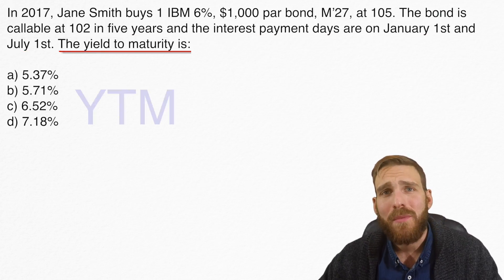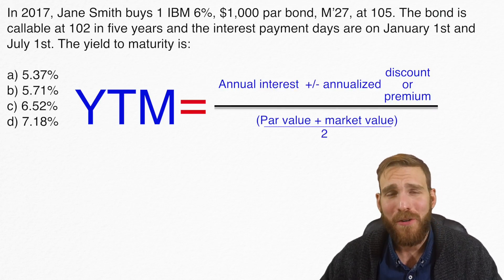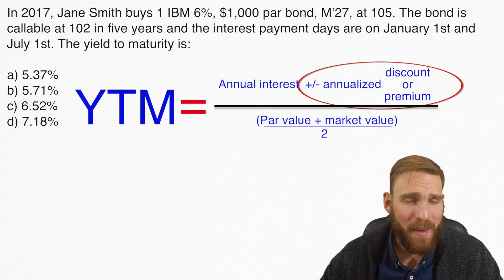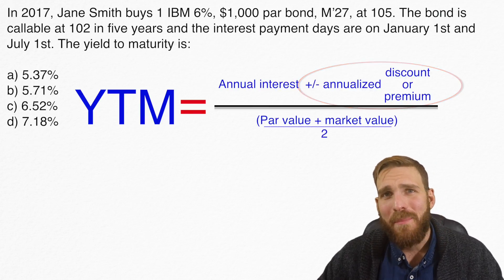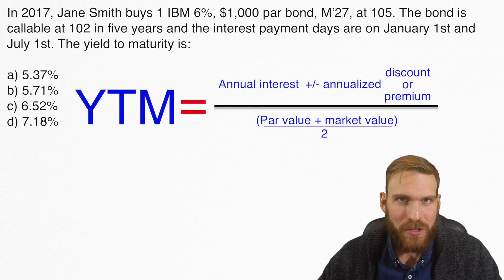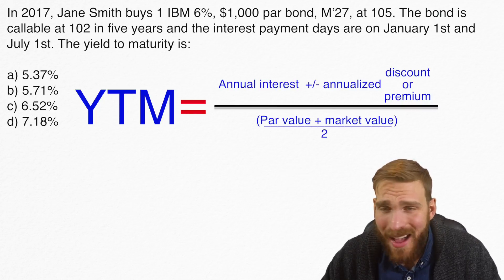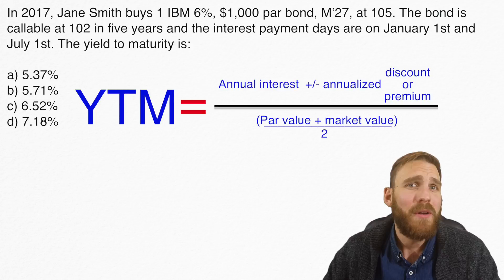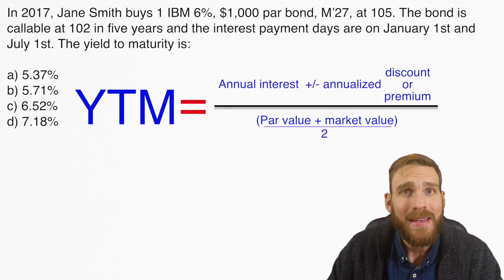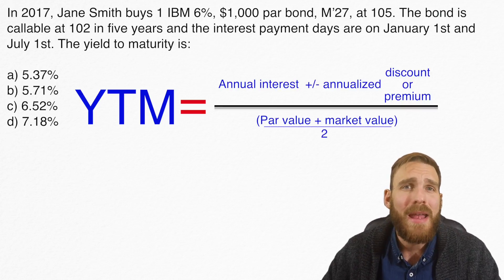There is a formula associated with yield to maturity and you could use that formula for this question. As you can see, there are a lot of parts to that formula. If you take your annual interest rate or annual coupon and subtract out your annualized discount or premium, and then divide that by the average bond price, that's how you get to the yield to maturity answer. The way I would prefer you do this question does not involve the equation at all. Once we put a bunch of concepts together, you'll start seeing there are some quick ways to eliminate answers almost right off the bat.